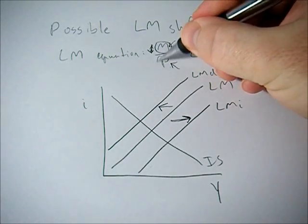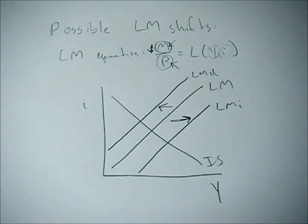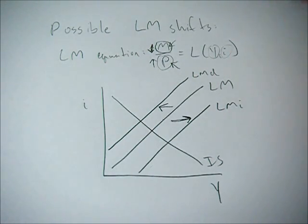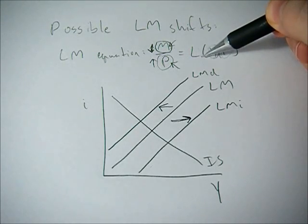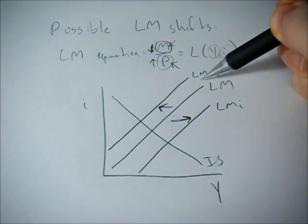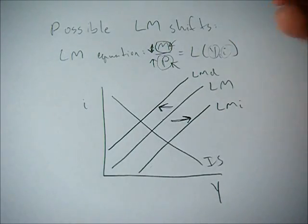And finally, what if the price level changes? So if the price goes up, since this is in the denominator, we're going to have to see a decrease in this money demand, which is going to be a decrease in our LM curve or a shift to the left.